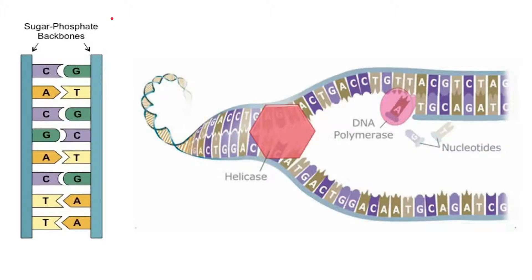It requires two enzymes: DNA helicase and DNA polymerase. The first step in DNA replication is separating the two strands by breaking the hydrogen bonds between them. This is the job of DNA helicase — it unwinds the DNA double helix, moves along the strand, and breaks the hydrogen bonds between complementary bases on the two strands, exposing the bases.